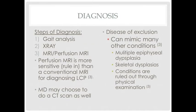Perthes disease is a disease of exclusion because it can mimic other conditions. Similar conditions must be ruled out by taking a careful medical history and doing a thorough physical examination. Physicians generally ask about family history of hip disorders, family history of early joint replacement, previous hip surgery, past use of steroid medication for asthma, history of sickle cell disease, history of hip infection, clotting disorders, and endocrine disorders.